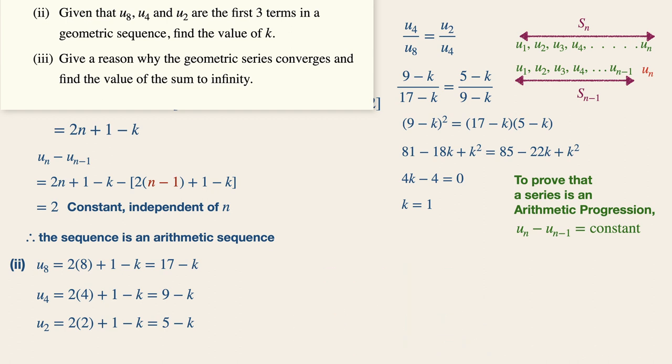Now for this case, the value of r is simply (9 - k) divided by (17 - k) as taken from the previous answer, and this will be equal to half. Now since the absolute value of r is less than 1, the geometric series is said to be convergent.